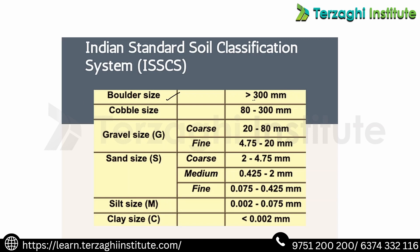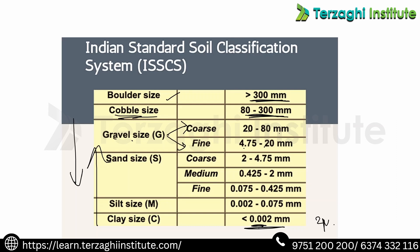Boulders are greater than 300 mm. Cobbles range from 80 to 300 mm. Gravel: coarse gravel is 20–80 mm and fine gravel is 4.75 to 20 mm. Clay is less than 0.002 mm, and silt ranges from 0.002 to 0.075 mm.